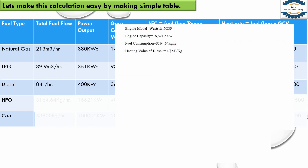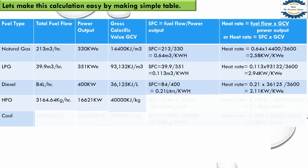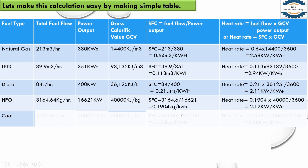For HFO, I selected a Wärtsilä engine 50DF. Its fuel consumption is 3,164.64 kilograms per hour and its engine capacity is 16,621 kilowatt — quite a large engine. The heating value of HFO is 40 megajoule per kg, which equals 40,000 kilojoule per kg. Dividing fuel flow by power output gives specific fuel consumption, and applying the heat rate formula, we get 2.12 kilowatt per kilowatt electric.